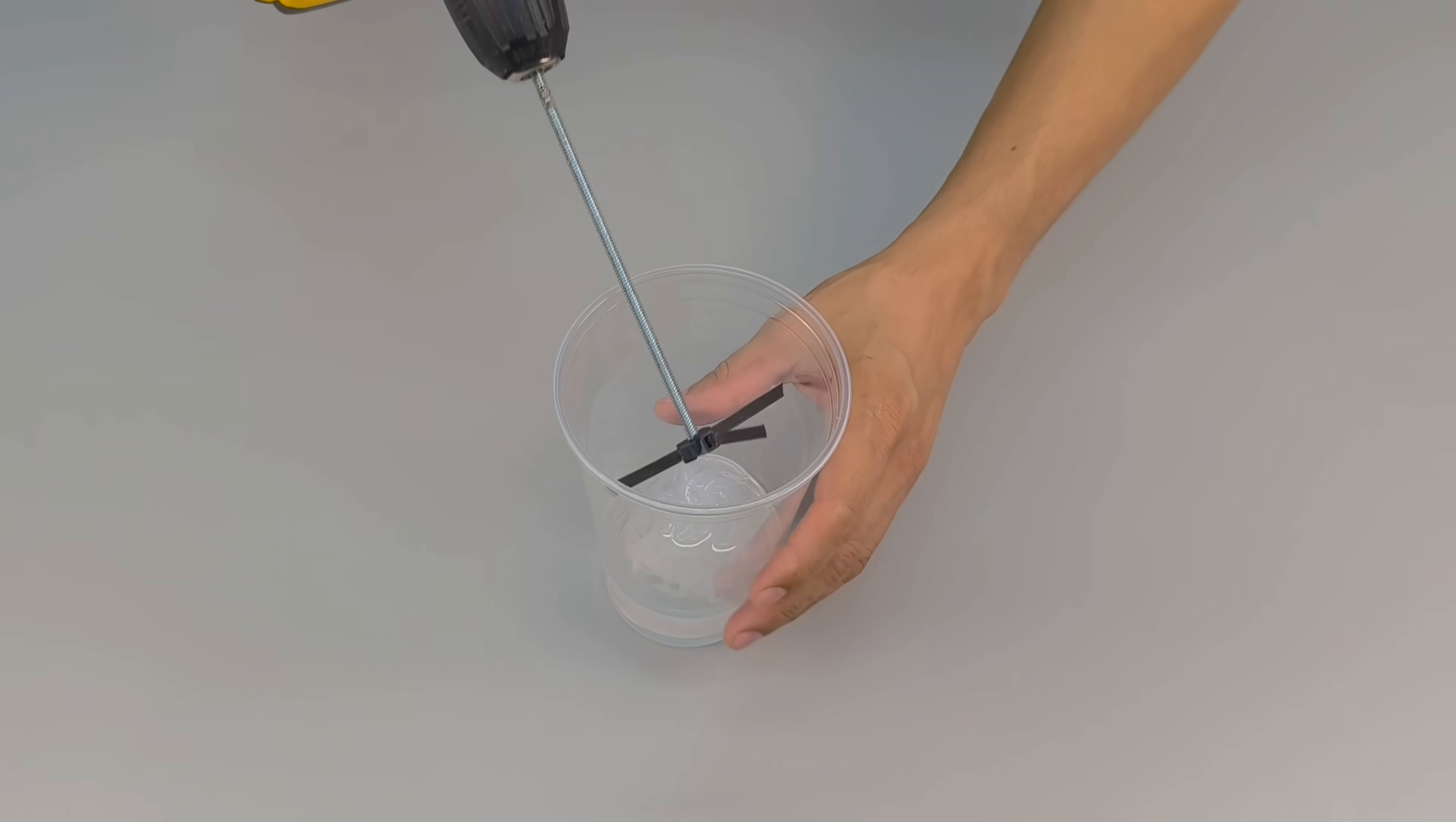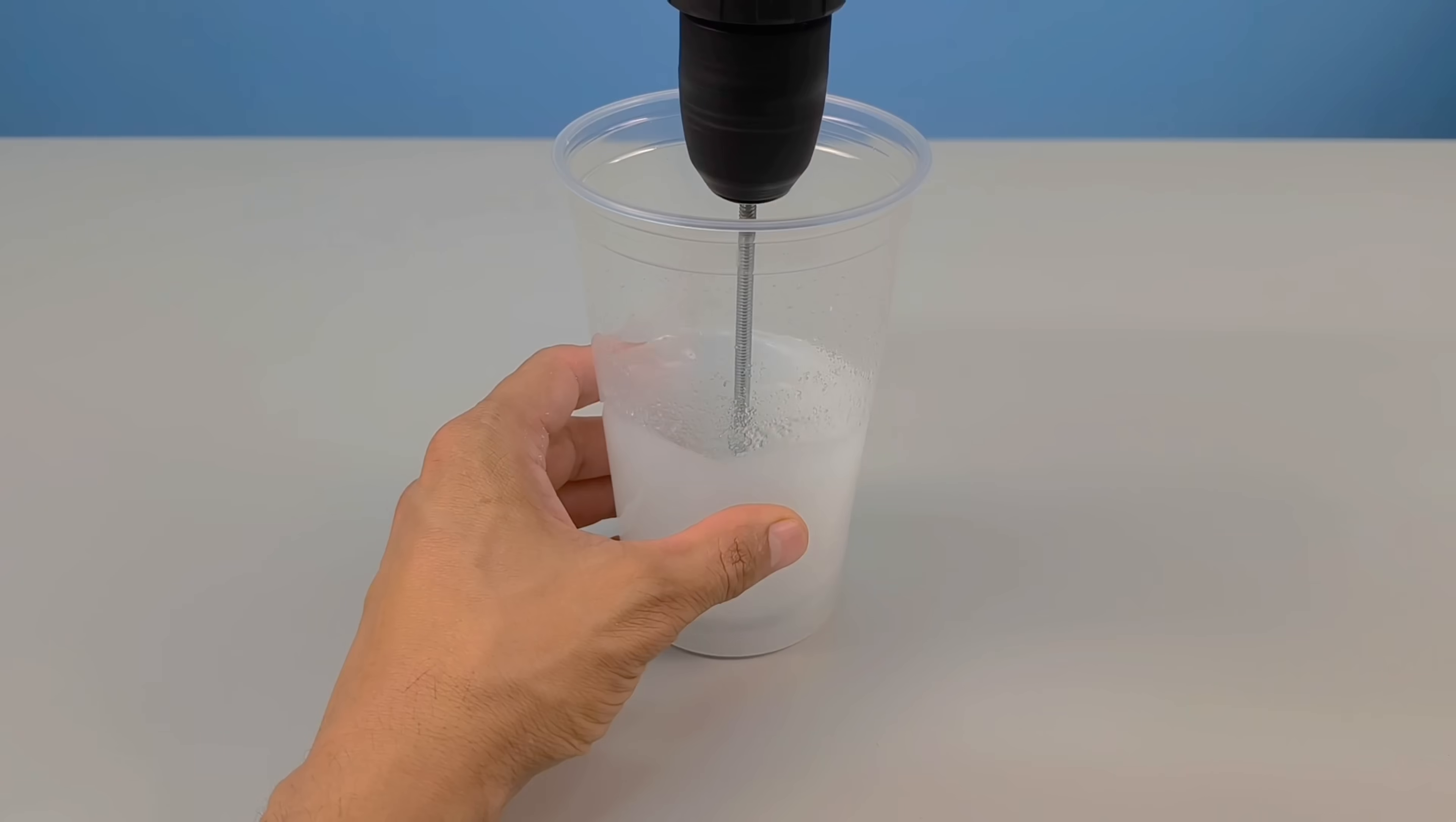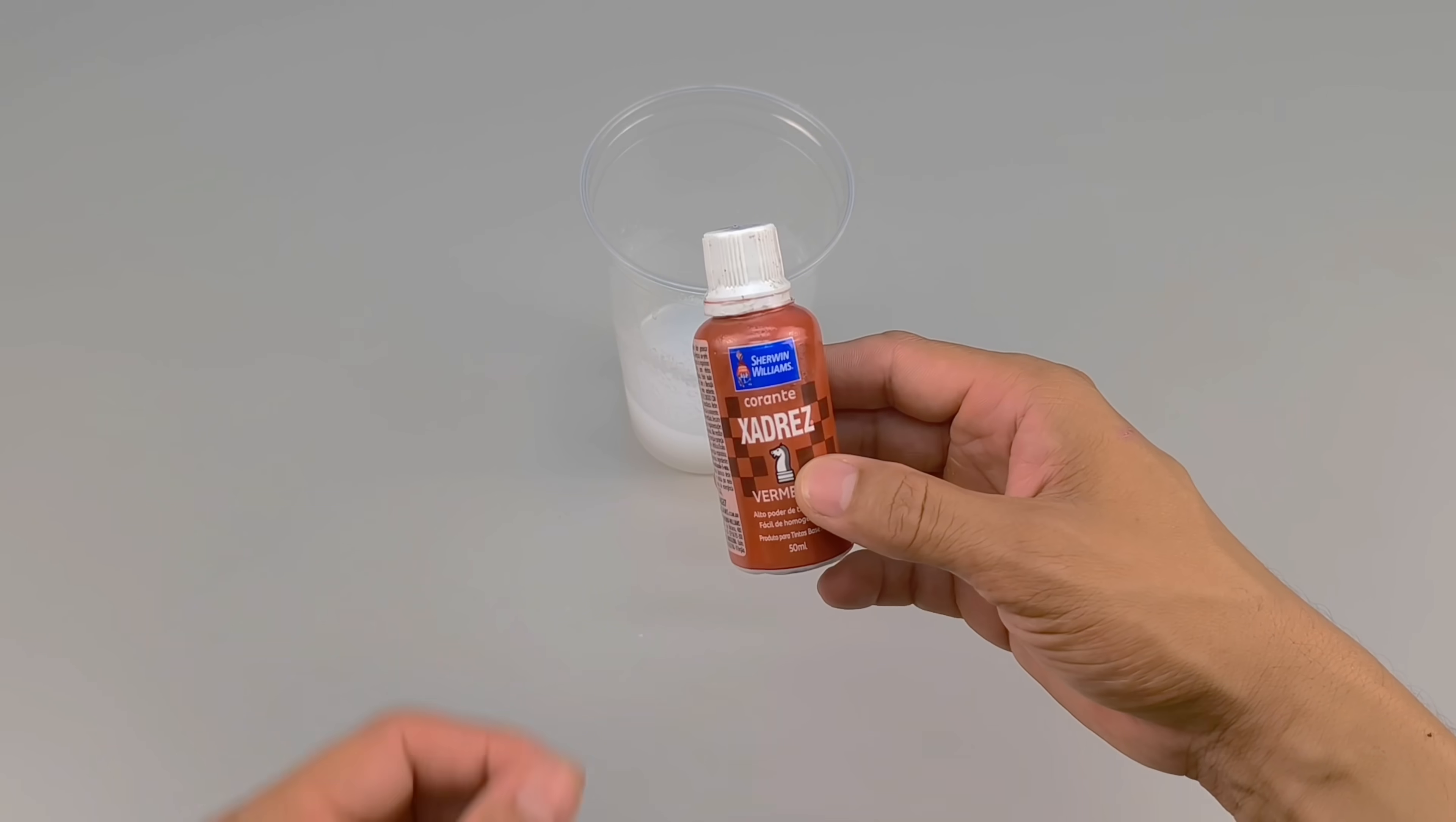When I turn on the machine, the magic begins. The propeller spins, mixes, and dissolves, and the texture transforms before my eyes. The silicone and thinner, previously so distinct, now combine in a homogeneous and surprising solution.